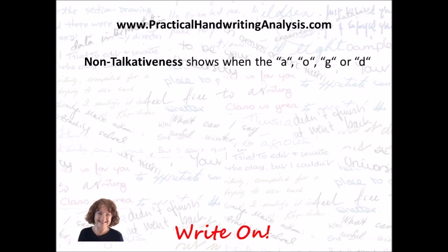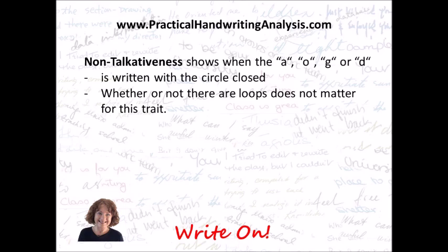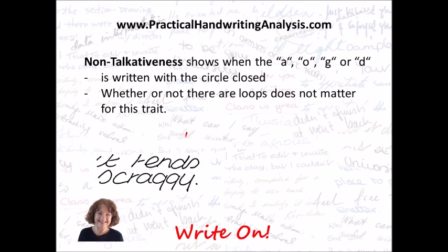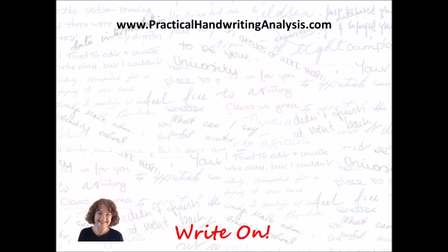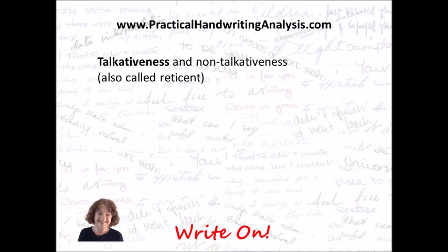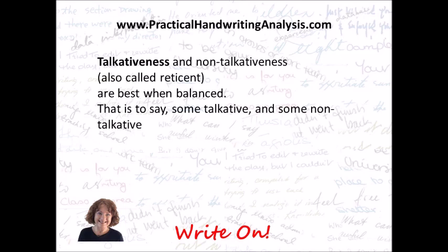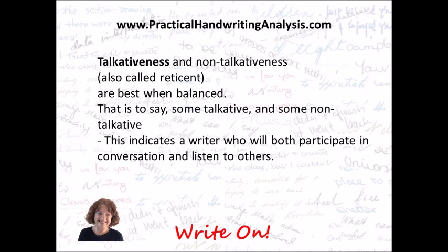Non-talkativeness shows where the A, O, G, or D is written with the circle closed. Whether or not there are loops doesn't matter for this trait. One example shows all circles closed in D, A, and two G's. Another has a mixture: the A in 'around' is open and the O and D are closed, so that person talks some of the time but is actually better at listening. Talkativeness and non-talkativeness are best when balanced, indicating a writer who will both participate in conversation and listen to others.